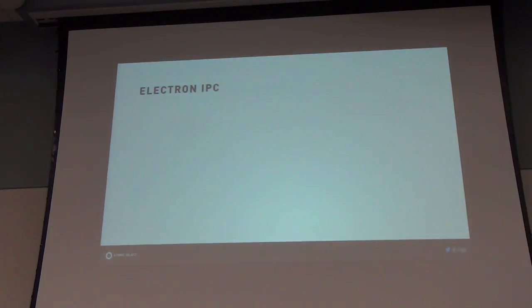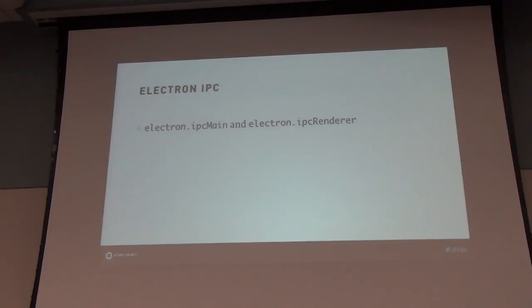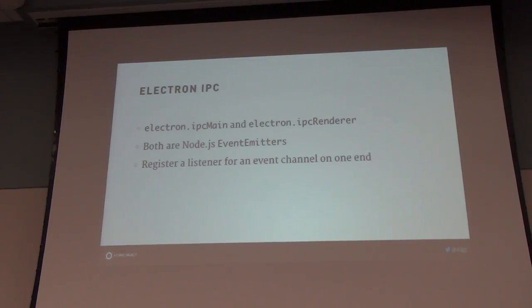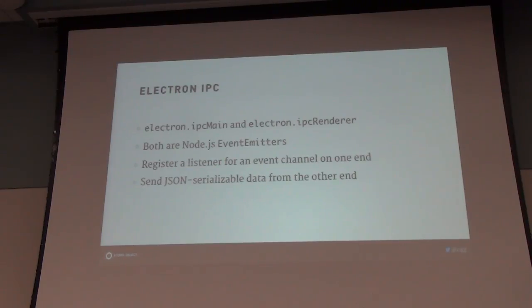Electron IPC is the main way you communicate between the guts of your program and its user interface. There are two Node modules responsible for this: ipcMain and ipcRenderer, depending on which one you're importing. You register a listener for an event channel — you name any channel you want, it's just an arbitrary string. You can send anything that fits into JSON over this IPC channel. Once you send it from one end, it will be picked up by the event listener on the other side.